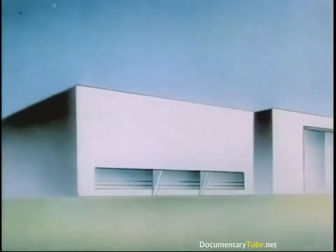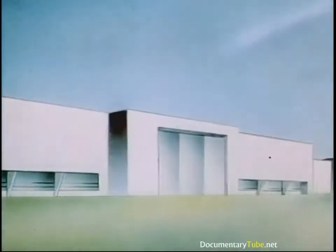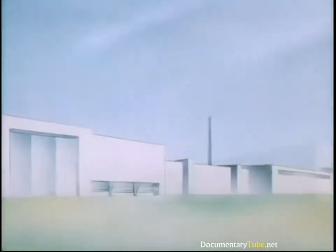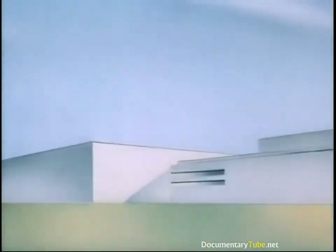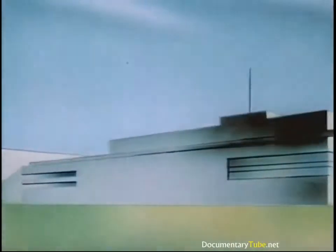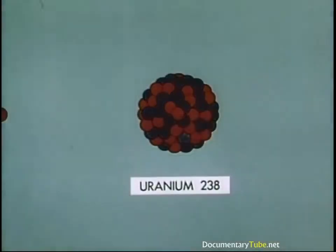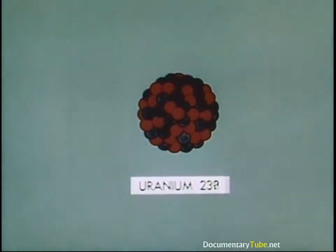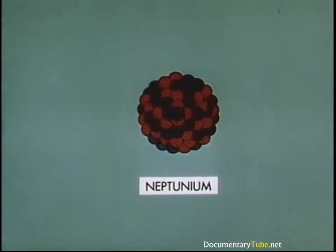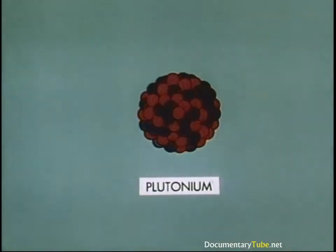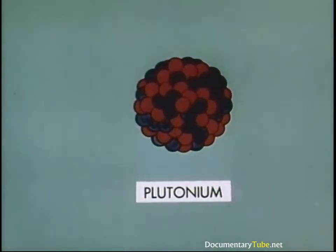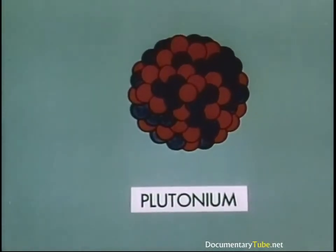The Manhattan Engineer District team of scientists, engineers, industrialists, labor, and military built huge plants to produce the material by this and other means. The scientists went further, taking advantage of the fact that uranium-238, instead of fissioning, tends to capture neutrons to ultimately become plutonium — and plutonium is as effective for fissioning as uranium-235.